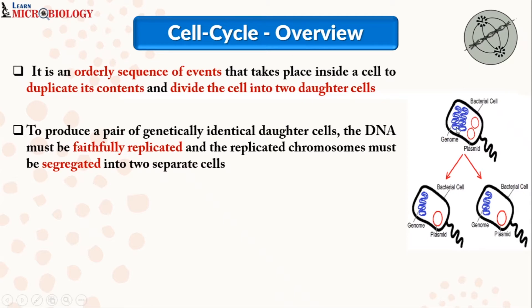We have seen that the genome has been divided and replicated. But during segregation — segregation means separation — if these are not segregated equally, then one bacterial cell will receive both copies of the genome and the other bacterial cell might not receive any copy of the genome. Hence, it is important that the DNA is faithfully replicated as well as segregated equally.